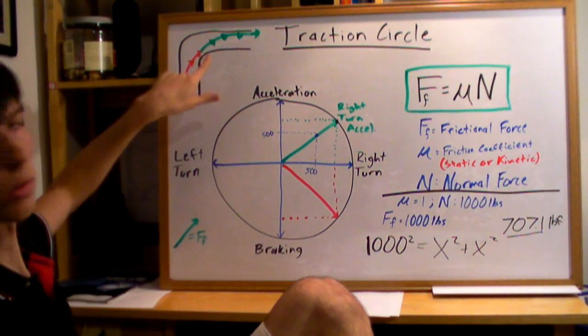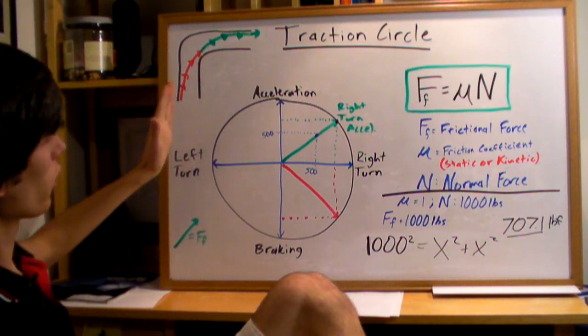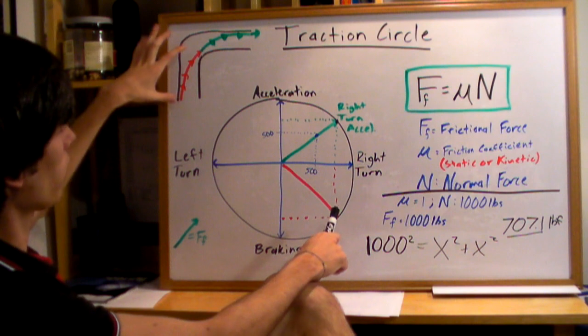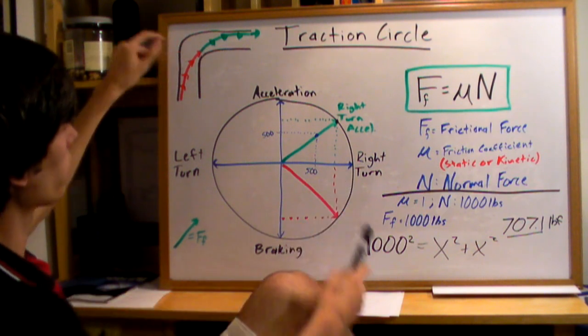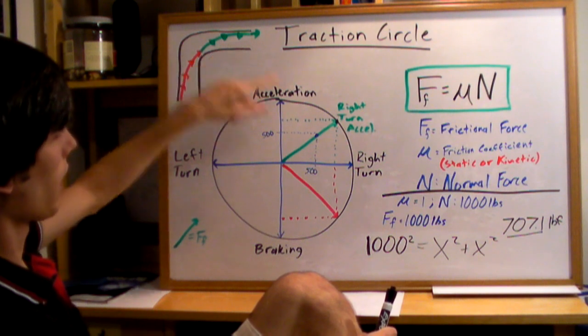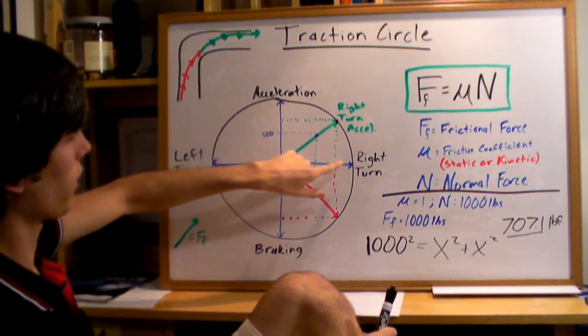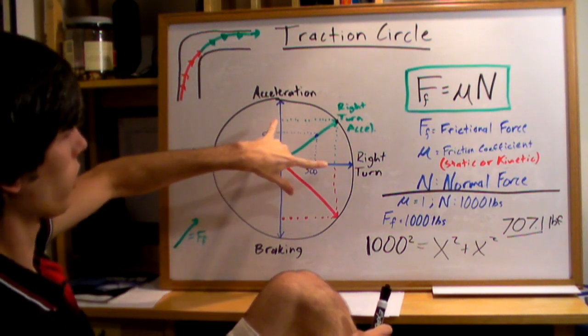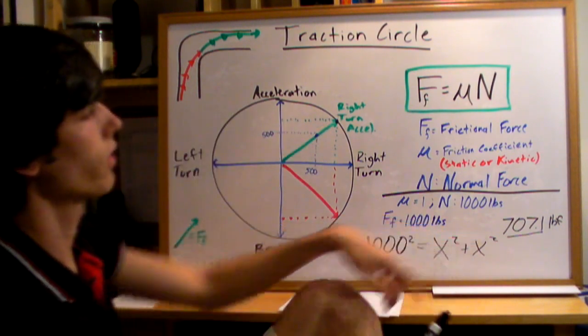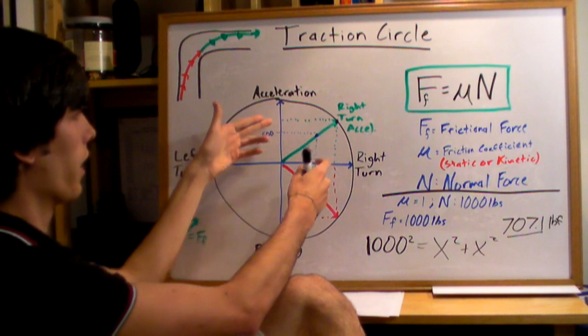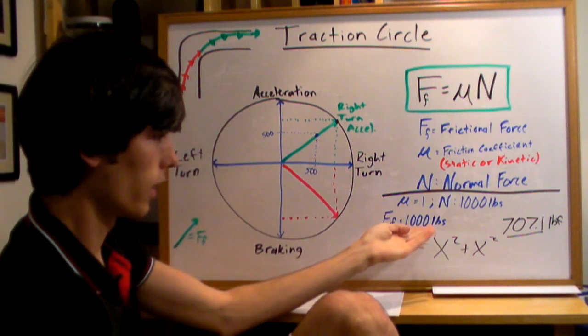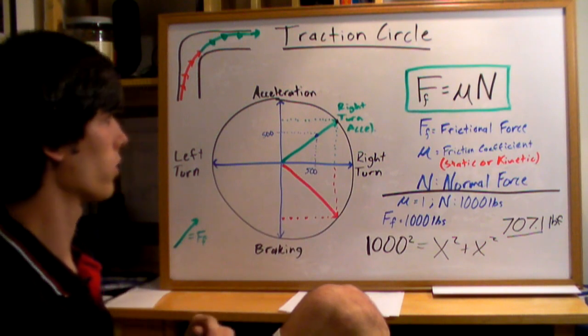When you're coming into a turn, we've got a right-hand turn here. You're going to want to be braking at this limit here of braking and turning. That way, you're using the maximum amount of force. And then, as you're coming out of that turn, you want to be accelerating as much as you can as well as turning as much as you can. So you're going to maximize the two there, and that's going to be at this point right here using 707 pounds of force in each the right turn and the acceleration. That's if you're using a 1000-pound car.